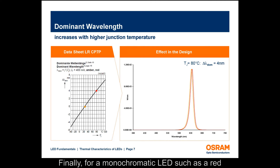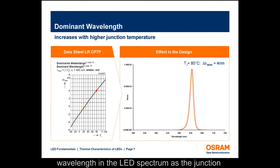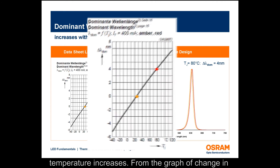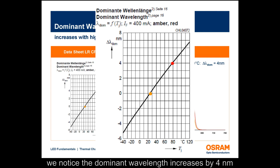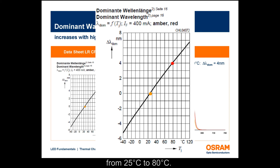Finally, for a monochromatic LED such as a red Aslan SSL LED, we see the change in dominant wavelength in the LED spectrum as junction temperature increases. From the graph of change in dominant wavelength versus junction temperature, we notice the dominant wavelength increases by 4 nanometers as the junction temperature rises from 25°C to 80°C.